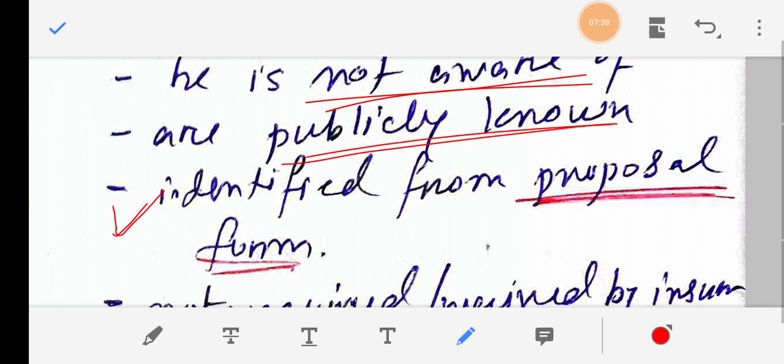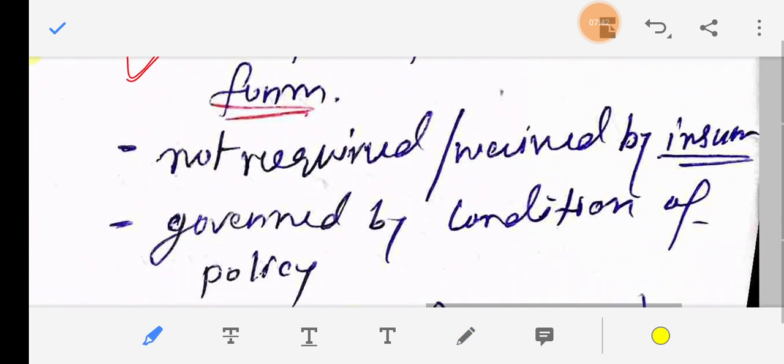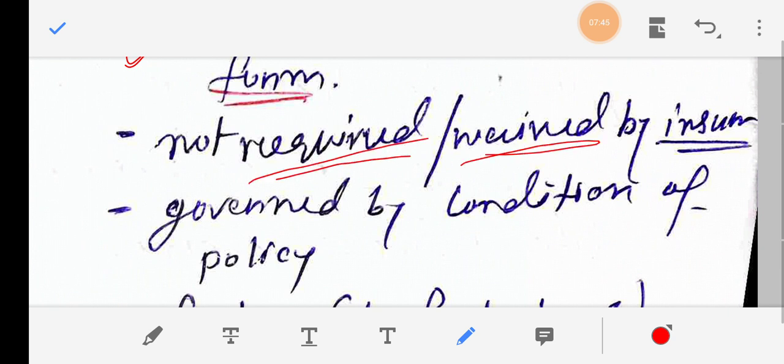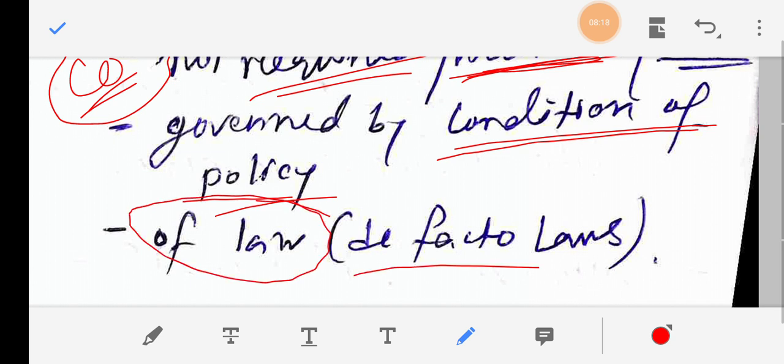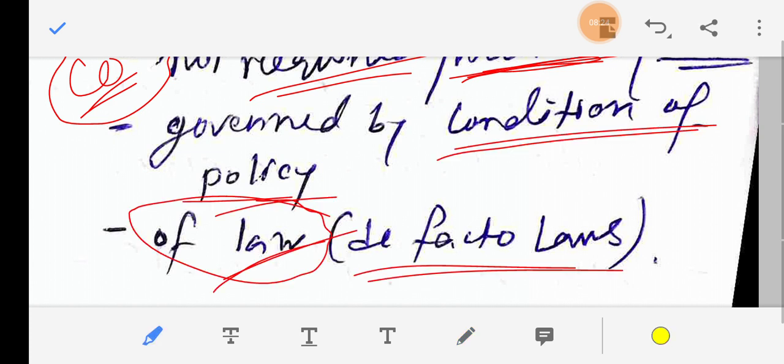Facts identified from the proposal form which are already written in the form need not be disclosed again. Facts not required or waived by the insurer - if the insurance company waives certain facts, they need not be disclosed. Facts the insurer already knows need not be disclosed by the policyholder. Facts governed by conditions of policy or by law - facts that are already in law are not necessary to disclose. This is the last thing.